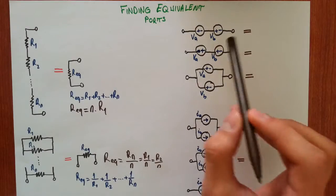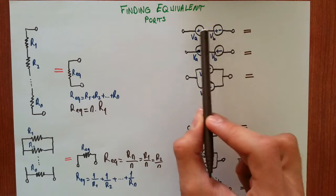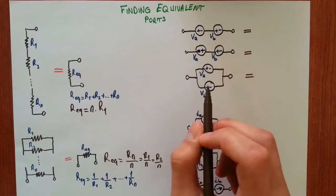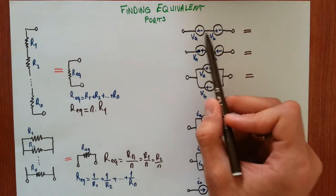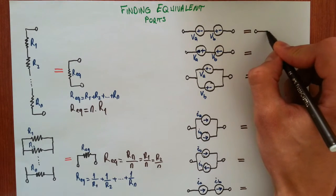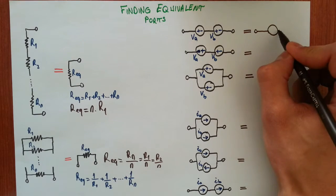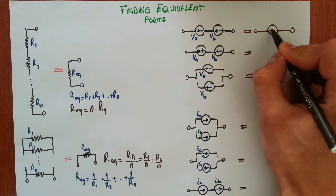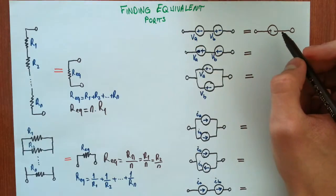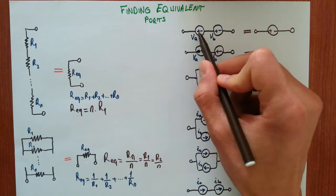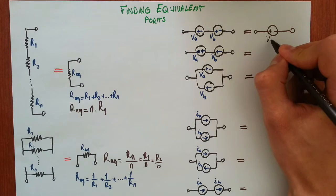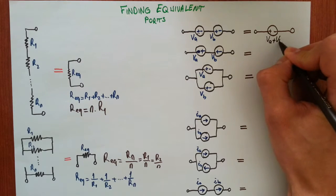Now, if you have two independent voltage sources in series and you want to reduce them into one single voltage source, the way you do it is very simple. Here I have chosen the same polarity — notice these polarities. The voltage value of this one single voltage source is then VA plus VB.